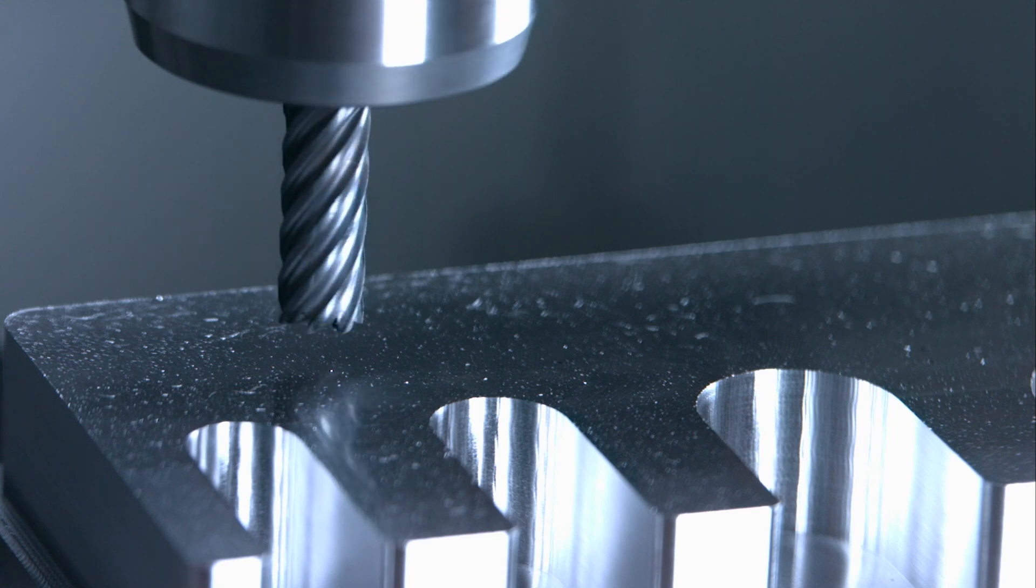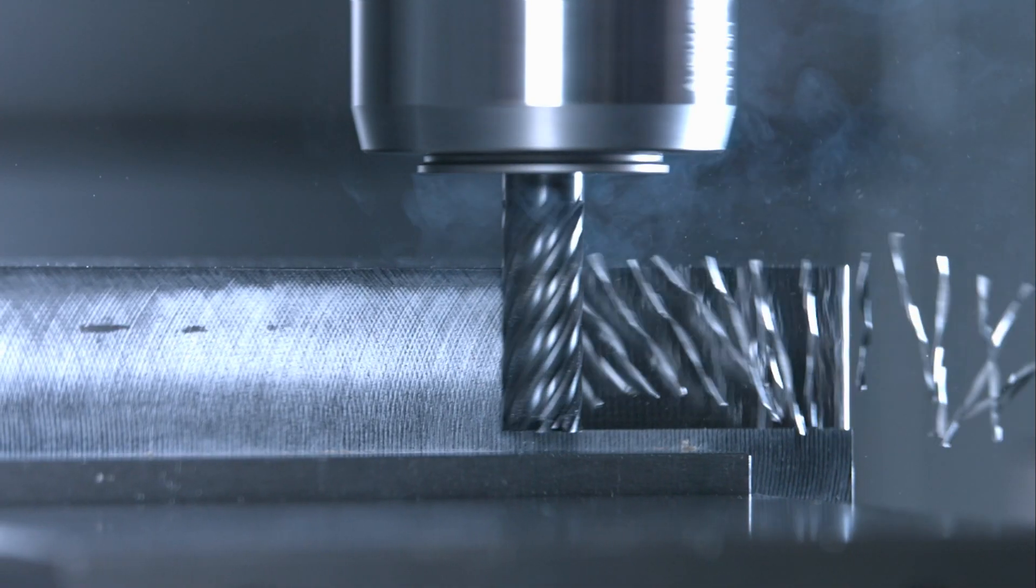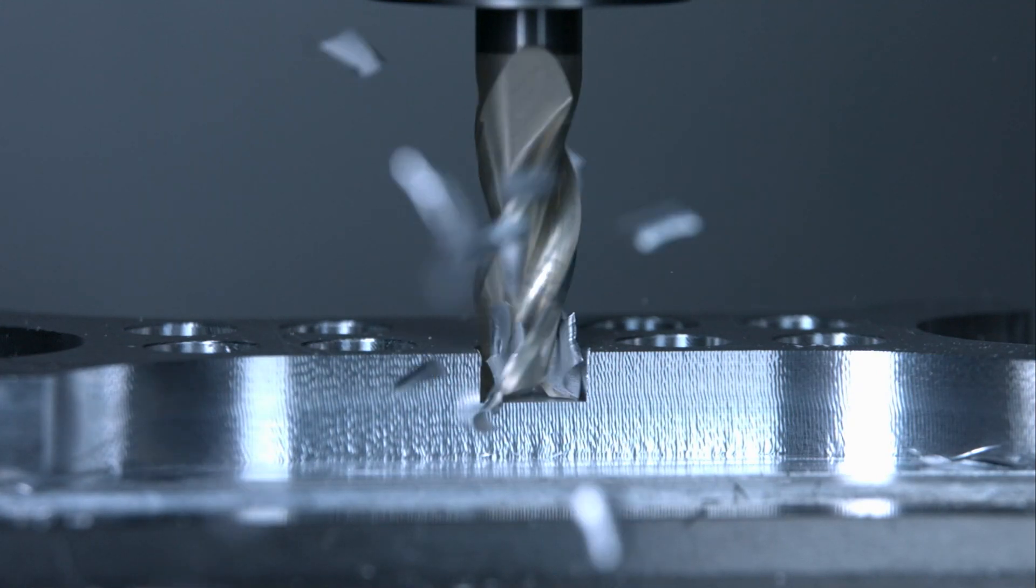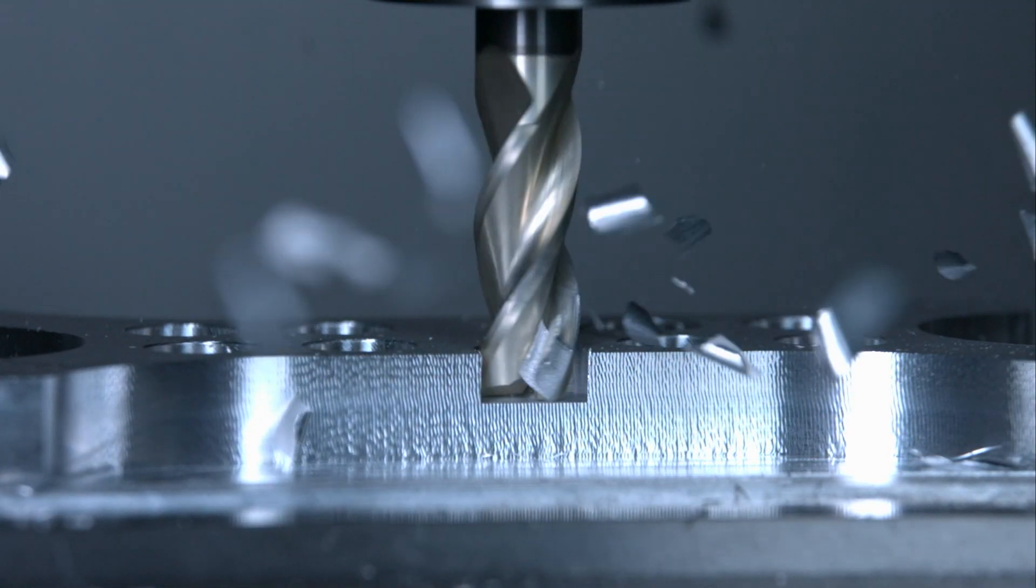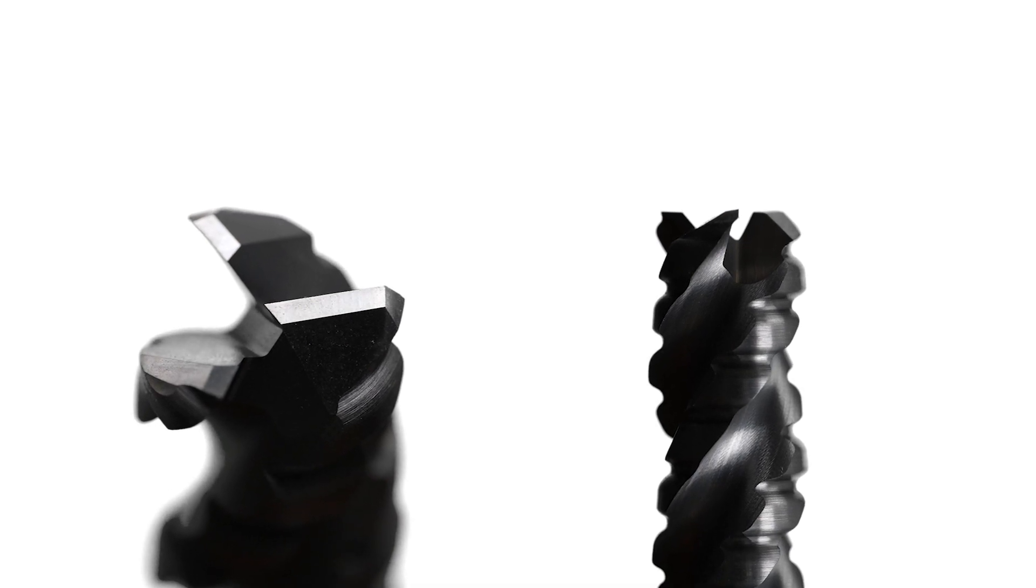Let's look at depth of cut. An end mill cuts with the side and end face. A step over uses the side of the tool, and a step down uses the end face to cut. Most end mill operations will cut with the side and end face at the same time.